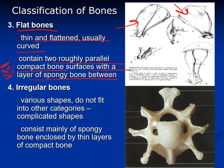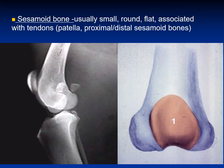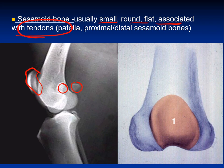We have the flat bone — for example the skull and the scapula. These bones are usually thin, flattened, and curved, and usually contain roughly parallel compact bone surfaces with a layer of spongy bone between them. Then we have the irregular bone — these have various shapes that don't fit the long, short, or flat categories, for example the vertebral column. Finally, we have the sesamoid — for example the patella and small sesamoid bones, which are small, round, and flat, usually associated with tendons.